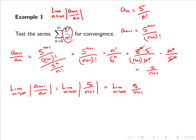And now if we calculate the limit we have 5 over infinity, or simply 0. So as 0 is less than 1, we can conclude that the series converges.